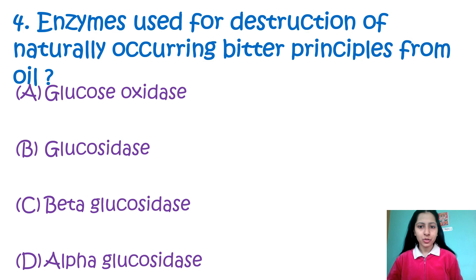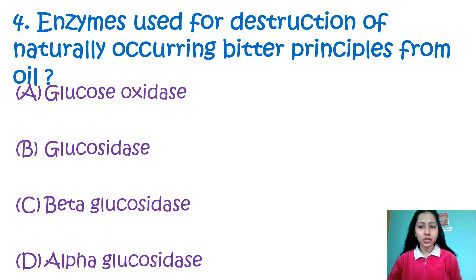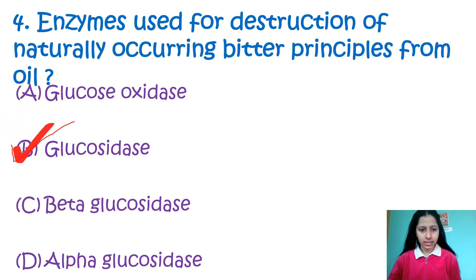Question 4: Enzyme used for destruction of naturally occurring bitter principles from oil — option A: glucose oxidase, B: glucosidase, C: beta glucosidase, D: alpha glucosidase. The enzyme used for the destruction of naturally occurring bitterness in oil is glucosidase, that is option B.